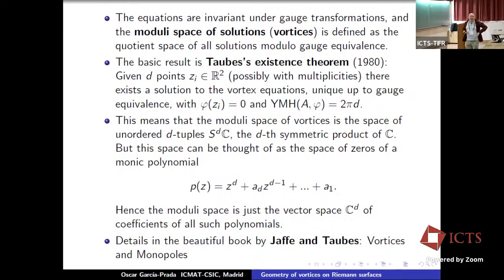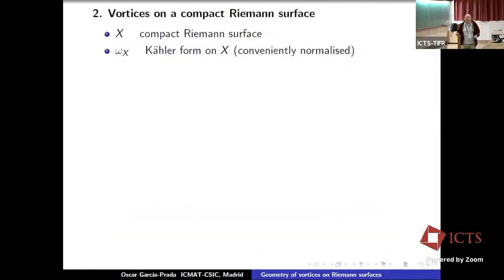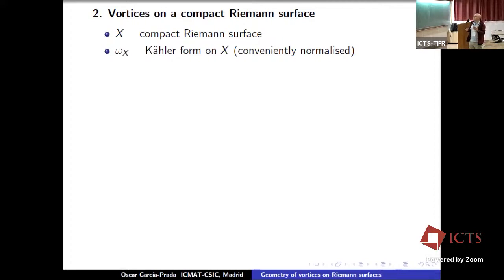That is all I will say about the non-compact situation on R² and coordinates. Now I want to consider the setup already mentioned this morning: vortices on a compact Riemann surface. My notation and conventions may not coincide with those of Nuno, but the whole theory is the same. So X is a compact Riemann surface, and we fix a Kähler form — all metrics on a compact Riemann surface are Kähler. We will conveniently normalize the volume of the surface as we progress.